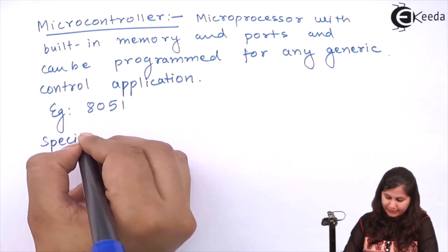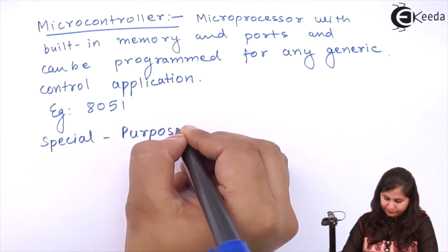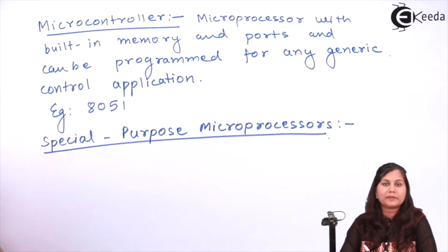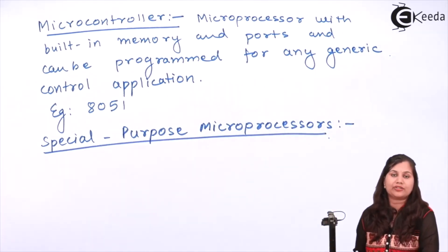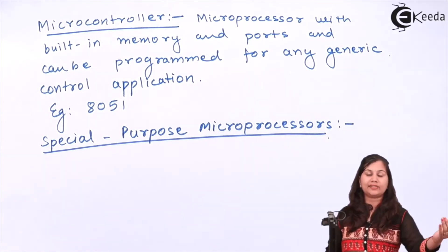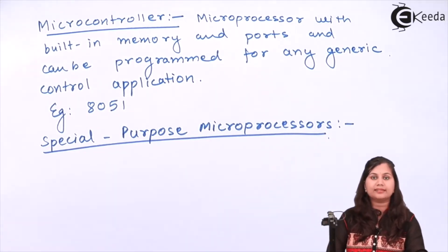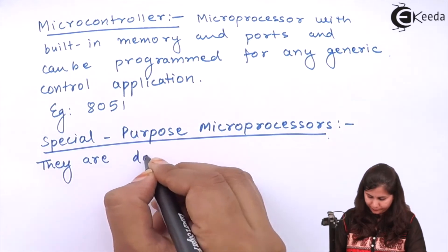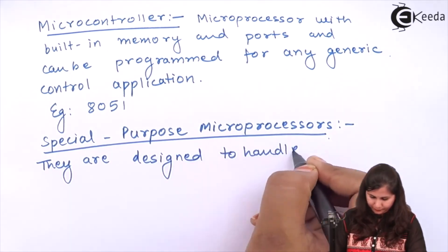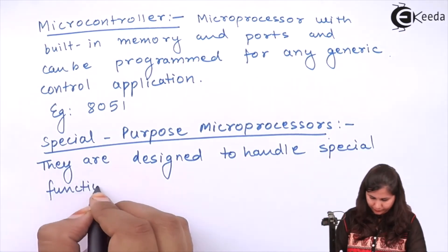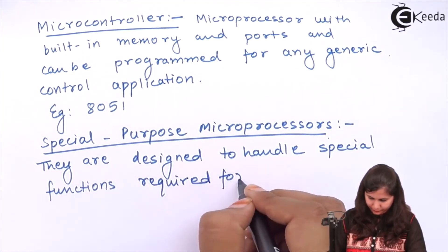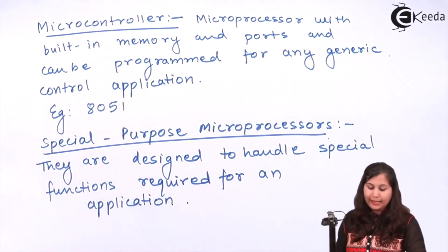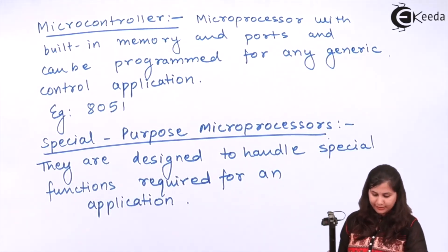The third type is special-purpose microprocessors. These are used in specific applications like radar, satellites, and flights. An example of a special-purpose microprocessor is digital signal processors (DSPs).